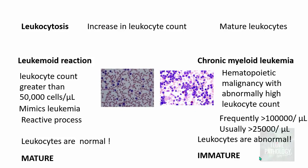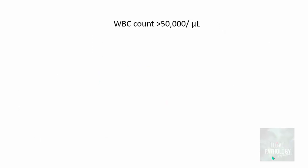All the leukocytes in leukemoid reaction are normal, mature leukocytes. This reactive process is basically a defense mechanism. Whenever there is an infection, the body tries to ward it off by mounting a response in the form of increased leukocyte count. Sometimes the increased leukocyte count is so high that it mimics leukemia — that's why it's called leukemoid reaction. So if the WBC count is more than 50,000 per microliter, there are two possibilities.